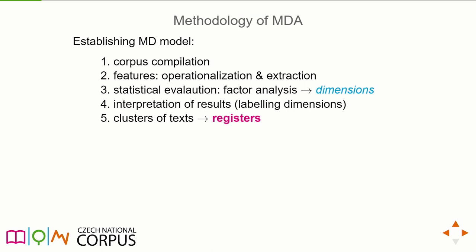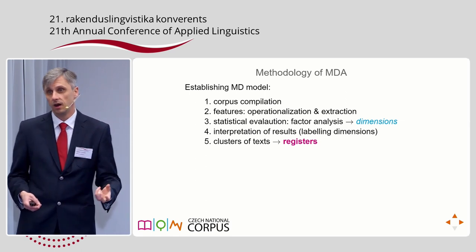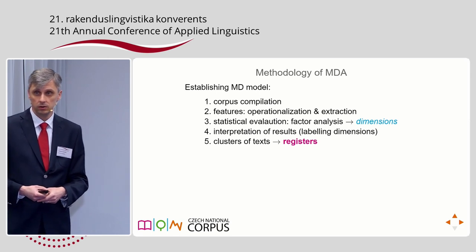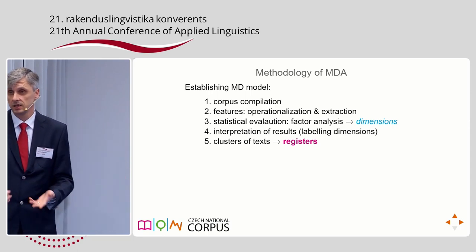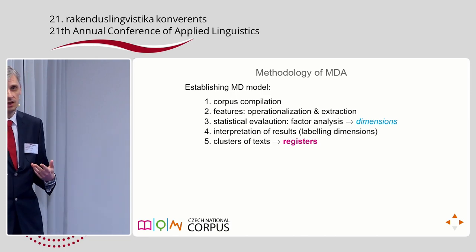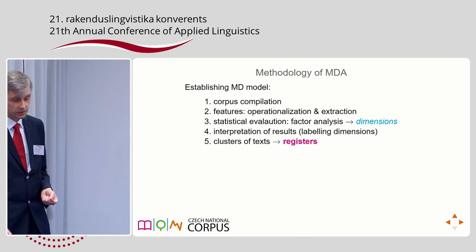If you are doing multidimensional analysis, you should go through five steps. First, compile a corpus on which you will build the model. Second, compile a list of features that are function-laden or connected to functional variability. Third, operationalize and extract them from the data — that's the hard part. Fourth, conduct statistical evaluation, normally factor analysis, which gives you dimensions. Fifth, interpret those dimensions, translating statistical numbers into linguistically meaningful labels, and finally establish registers as clusters of texts.